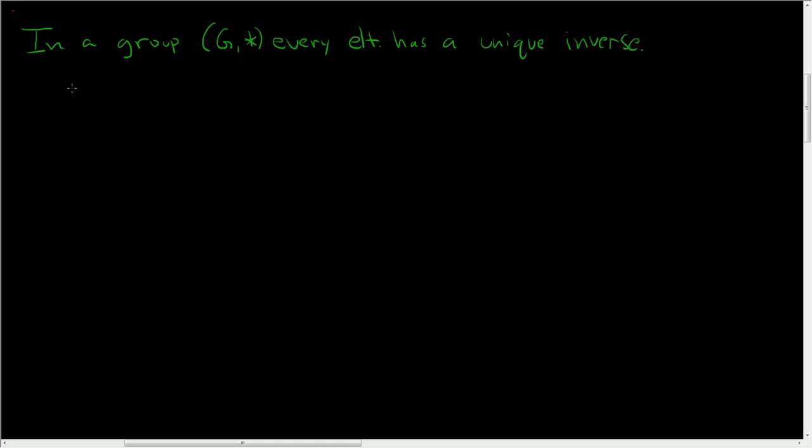So in this problem we need to show that in a group G, every element has a unique inverse. So it's a pretty easy proof, but it's worth doing on your own.